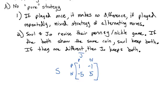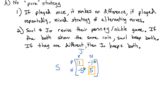To find the optimal strategy, we protect ourselves against the worst case scenario. For the row player, the worst case is the lowest number in each row: negative one in row one, negative five in row two. The column player wants to protect against the biggest number: one in column one, five in column two. The box and the star do not line up, so there is no pure strategy they should always choose. They're going to need to pick some mixed strategy.